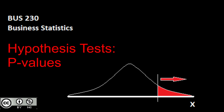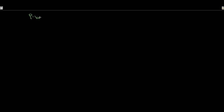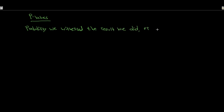Let's take a look at p-values and the idea behind them. With our p-values, what a p-value is essentially getting at is: what is the probability we witnessed the result we did if the null is true? We pull out some sample mean and we figure out what's the probability of witnessing this sample mean or more extreme, under the assumption that the null is true.